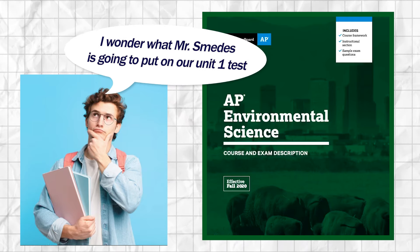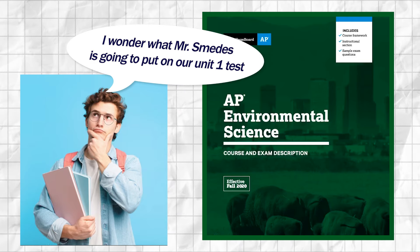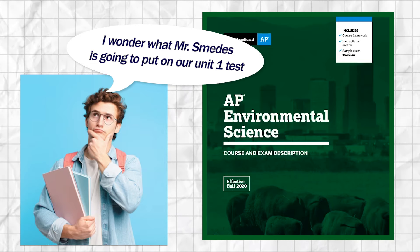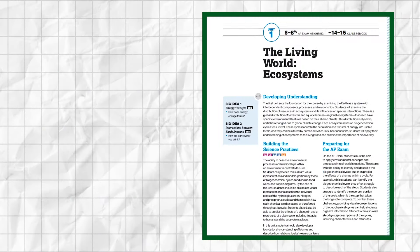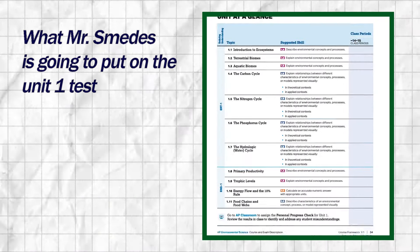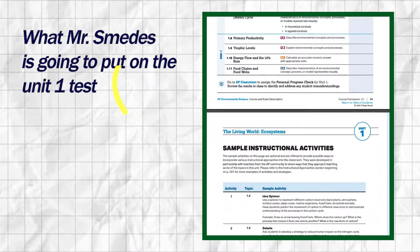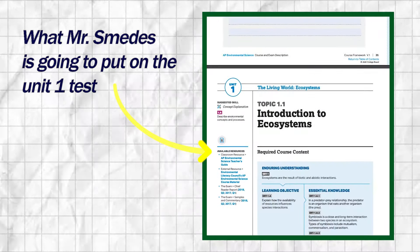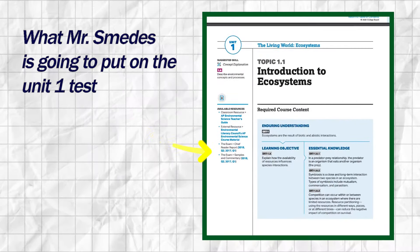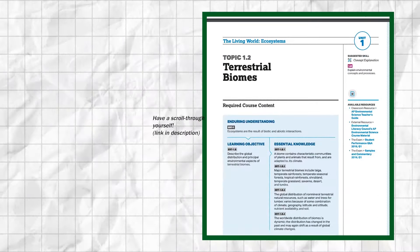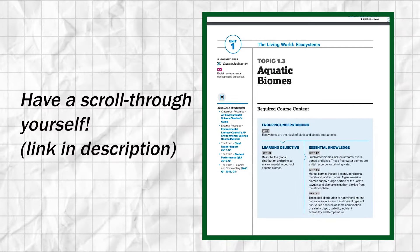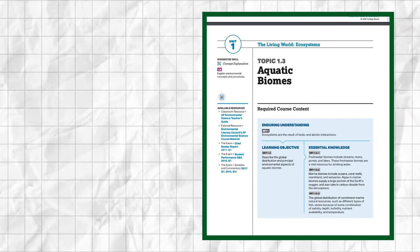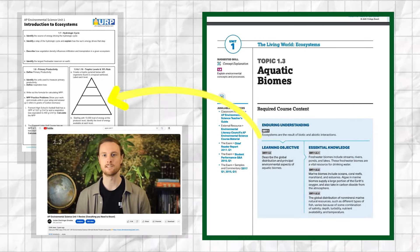Let's start with the content that's most likely to show up on your unit one test. The easiest way to identify the most important concepts is to look at the APES Course and Exam Description, which is the document the College Board created for your teachers so they know exactly what to cover in every unit and exactly what to put on your unit one test. While it's helpful for you to go through the CED for each unit yourself,